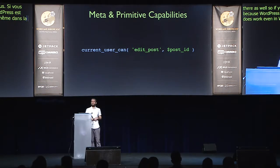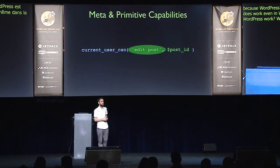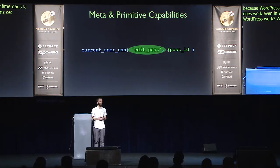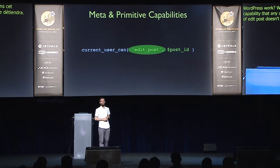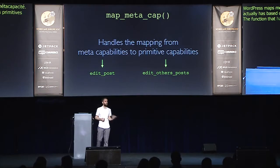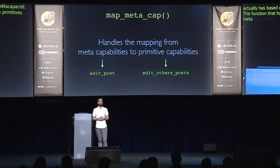How does the capability system in WordPress work? For example, edit_post — the singular form — is not actually a capability that any user or role will have. It's a meta capability. WordPress maps meta capabilities to the primitive capabilities that a user actually has based on context — in this case, the post ID. The function that handles this is called map_meta_cap, which handles mapping of meta capabilities such as edit_post with a post ID to the primitive capabilities actually required of the user to perform the action.